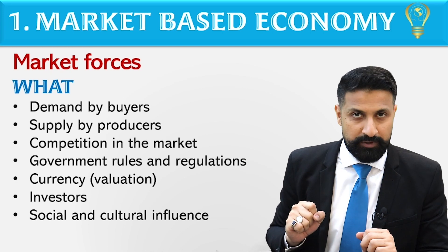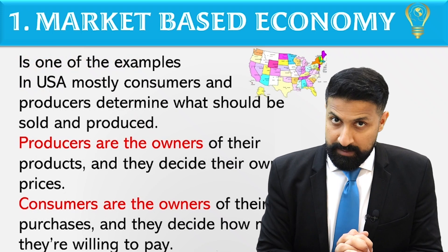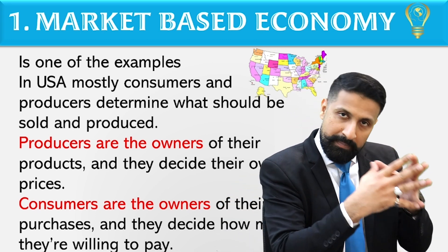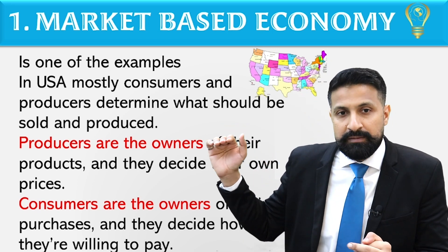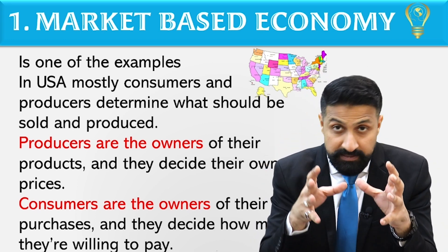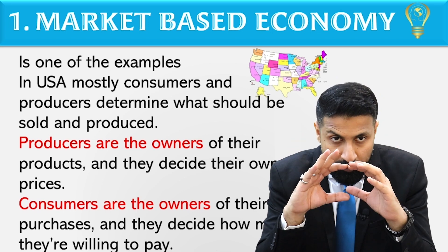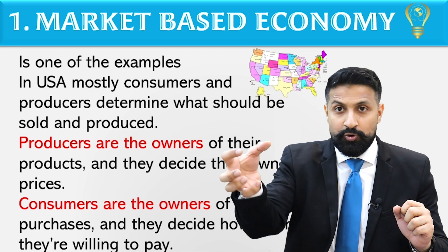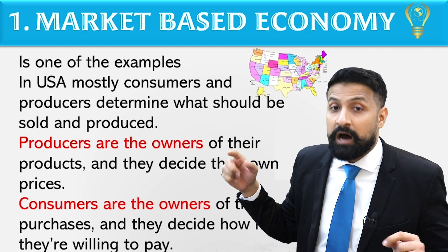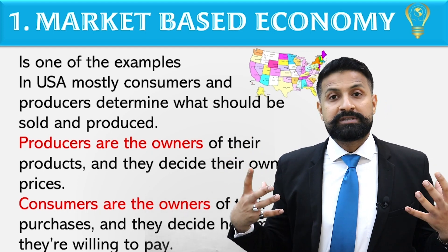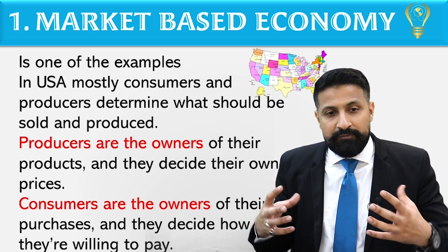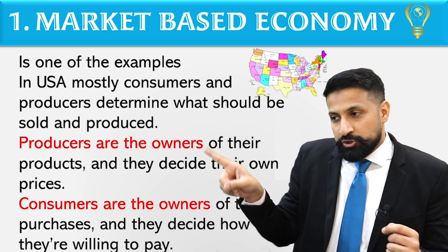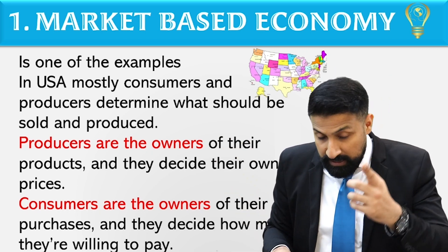Now let's talk about the USA. The USA is in one way a market-based economy, but in reality it is a mixed economy. In the USA, mostly consumers and producers determine what should be produced and sold. The economy runs largely on a market-based level. However, there are certain things that the government must take into its own hands. Producers are the owners of their products and consumers are the owners of their purchases — each decides on their own terms.